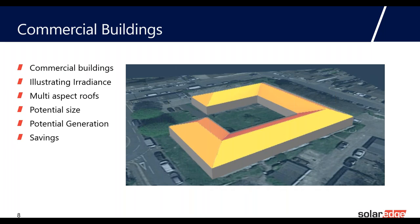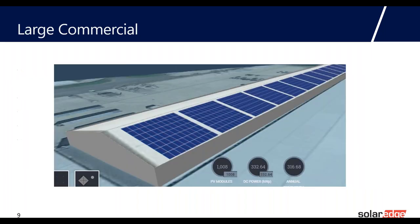Commercial buildings work very similarly to residential. We have the ability to show the irradiance — southerly aspects will generate more power compared to northerly aspects — giving you a nice guideline for the potential energy from each available roof. The designer shows the potential size and generation of the PV system, including CO2 savings and electricity savings. This applies to both residential and commercial.